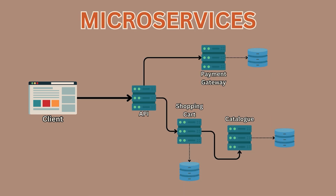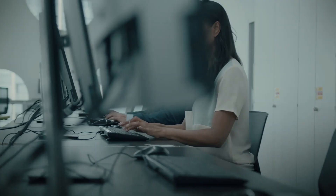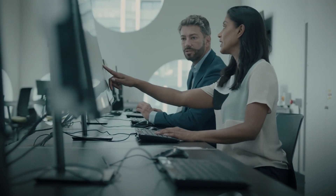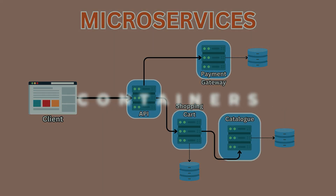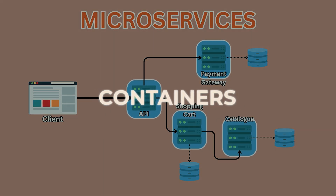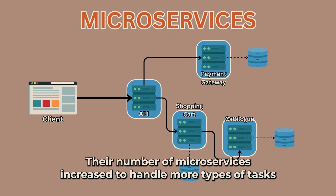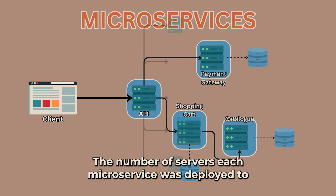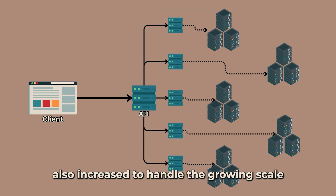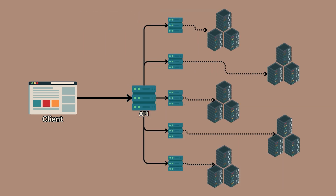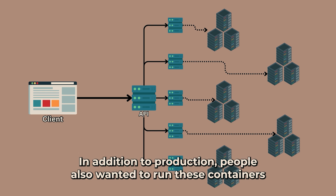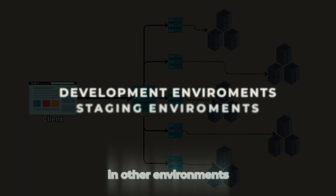Each microservice does one thing and is independently scalable. Next, we wanted to run these applications on different computers without any dependency issues, so we started packaging them into containers. As some of these applications got bigger, they faced a very interesting challenge. The number of microservices increased to handle more types of tasks, and the number of servers each microservice was deployed to also increased. In addition to production, people also wanted to run containers in other environments like dev and staging. Suddenly, they were running tens of thousands of containers in their infrastructure.